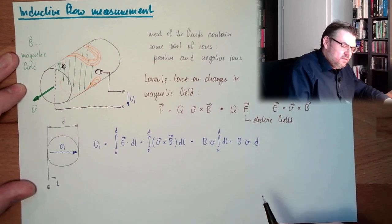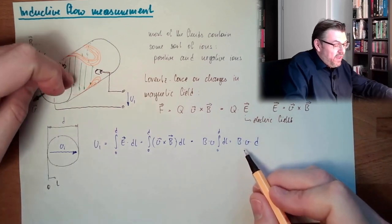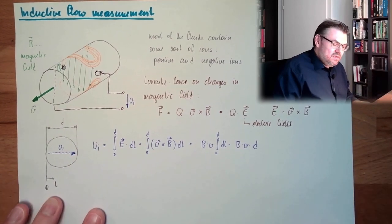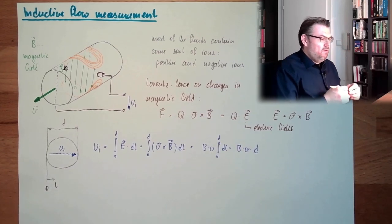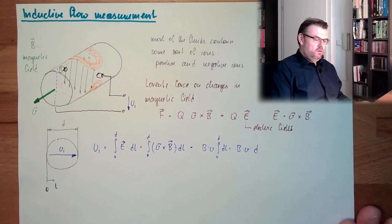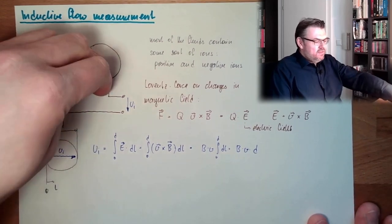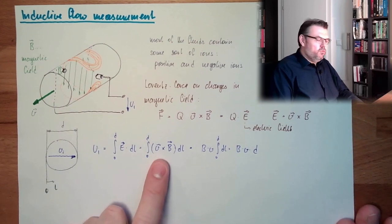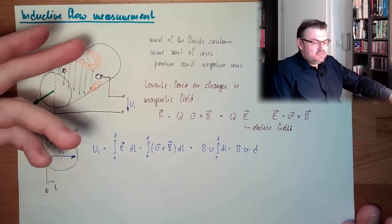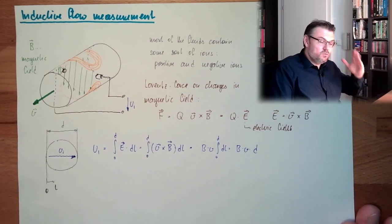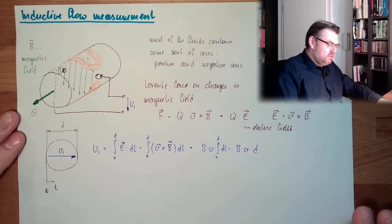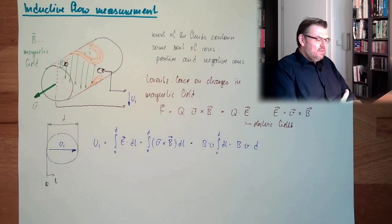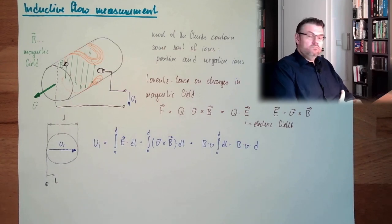So the velocity multiplied by the strength of the magnetic field multiplied by the distance. This is the voltage I am about to measure. And this is only valid if this is 90 degrees. Because actually this product, there would also be the sine of the angle. But this angle here is 90, and sine of 90 degrees is 1. So this is also implied here. Okay, so this is the inducted voltage there.